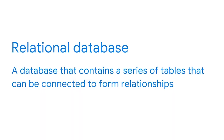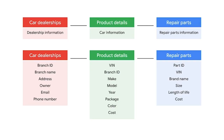If you've been working with databases using SQL, you're probably already familiar with relational databases. A relational database contains a series of tables that can be connected to form relationships. These relationships are established using primary and foreign keys. In a car dealership database, BranchID is the primary key in the car dealerships table, but it is the foreign key in the product details table. VIN is the primary key in the product details table and the foreign key in the repair parts table. Notice how these connections create relationships between all of the tables.